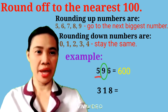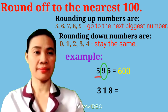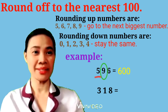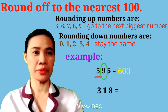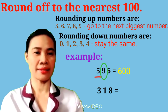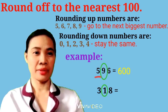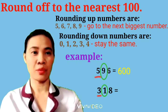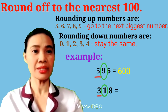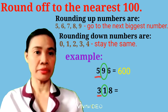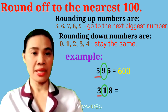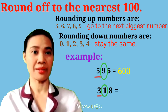Another example: 318. 8 is in the ones place, 1 is in the tens place, and 3 is in the hundreds place. As I told you, when you round off to the nearest 100, you should always look at the tens place. 1 is a rounding down number, so it cannot add 1 to 3. So what is going to happen? 3 is still the same, then 1 and 8 turn to 0, and it's going to be 300.